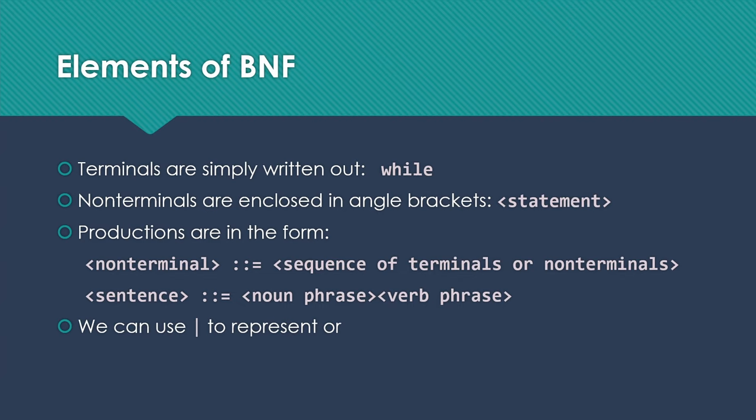Non-terminals are going to be enclosed in angle brackets, so that we can distinguish them from the terminals. Then productions are going to be in the form some non-terminal, then colon, colon, equals, and then some sequence of terminals or non-terminals. Worth noting that sometimes that colon, colon, equals symbol is written a little bit differently. You might see it with just one colon, or with a colon followed by a hyphen or dash. This, however, is the most common version of the syntax.